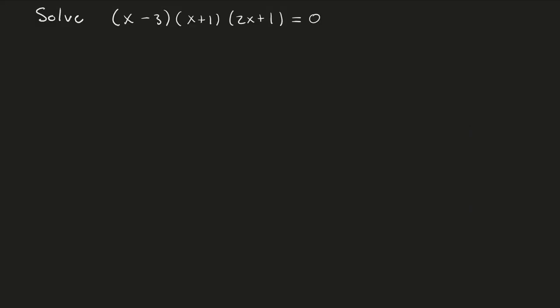To get us started we're going to first talk about solving polynomial equations. In this problem we're trying to solve (x minus 3)(x plus 1)(2x plus 1) equals 0. This problem is already factored, so the question is how do we solve a factored polynomial? We use the zero factor property.